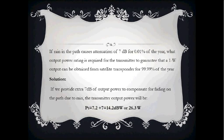A second part of the problem: if rain on the path causes attenuation of 7 dB for 0.01% of the year, what output power rating is required for the transmitter to guarantee 1 W output from the satellite transponder for 99.99% of the year? The solution is to provide an extra 7 dB of power to compensate for rain fading, giving a transmitted power of 1.2 + 7 = 8.2 dBW, equal to 26.3 W.